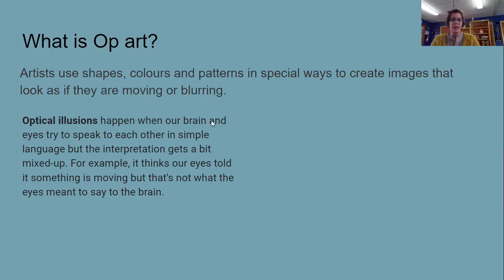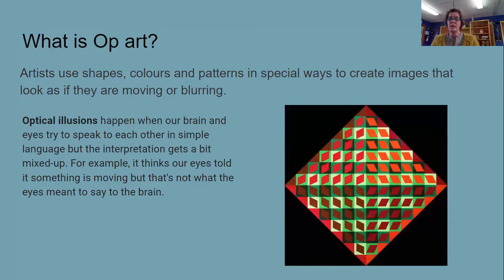Optical illusions happen when our brain and our eyes try to speak to each other in a simple language but the communication gets a little bit mixed up. So for example, our eyes told it something is moving but that's not what the eyes meant to say to the brain. So the eyes are saying wait this isn't moving but the brain is saying but it looks like it's moving. You can see the same idea happening with this artwork, how the shapes look like they're moving or vibrating on the canvas.